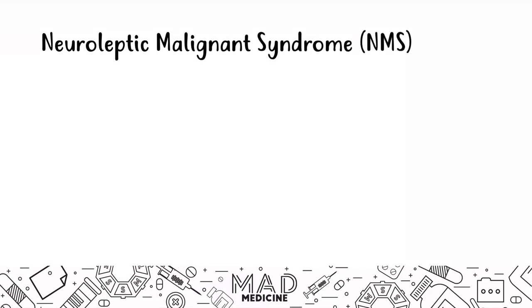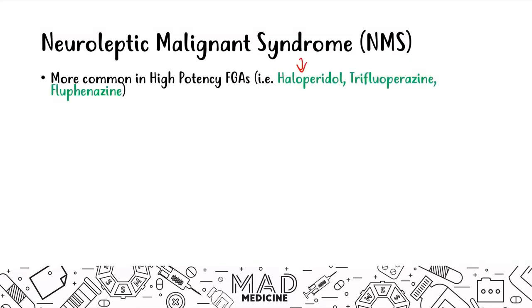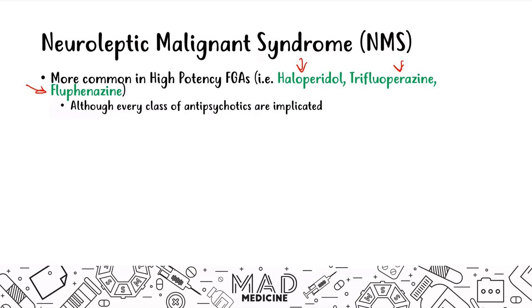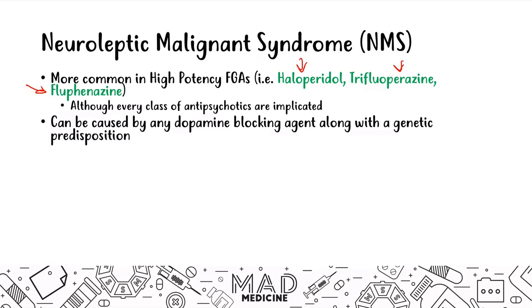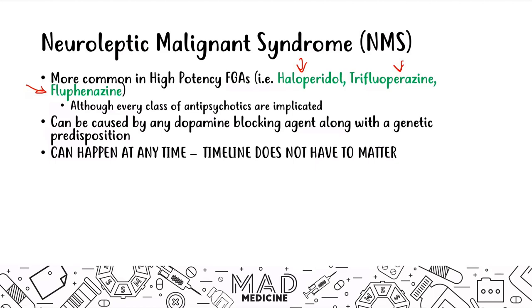The next psychiatric emergency is neuroleptic malignant syndrome, or NMS. This is more common with high-potency first-generation antipsychotics like haloperidol, trifluoperazine, and fluphenazine, though it can happen with any class including second-gen antipsychotics, and can be caused by any dopamine blocking agent along with a genetic predisposition. Importantly, NMS can happen at any time — unlike EPS symptoms, there's no corresponding timeline.